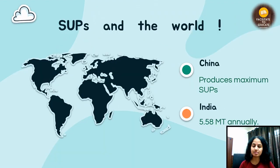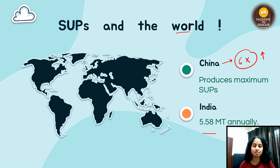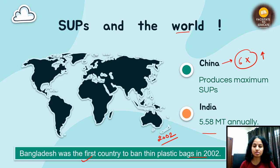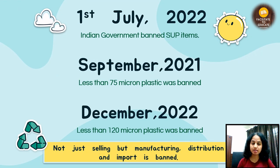Now let's talk about single-use plastic around the world. We have talked about India. China is the biggest producer of single-use plastic — producing more than six times as much. Besides that, Bangladesh was the very first country to ban plastic bags, in 2002.